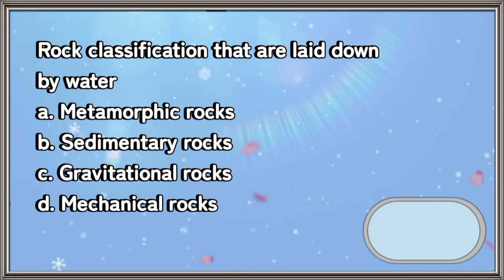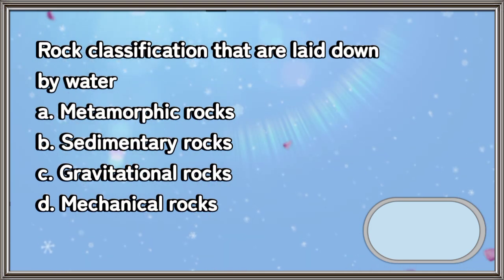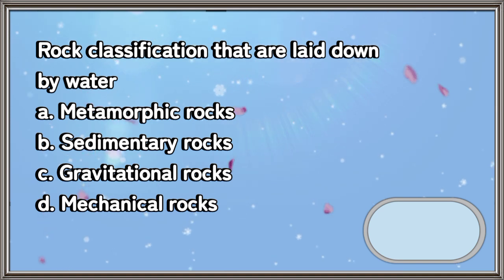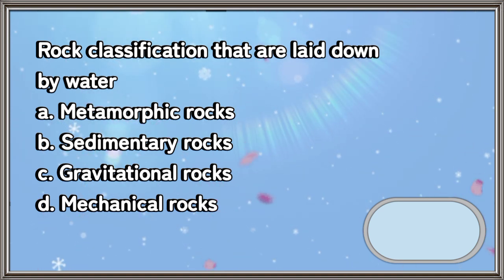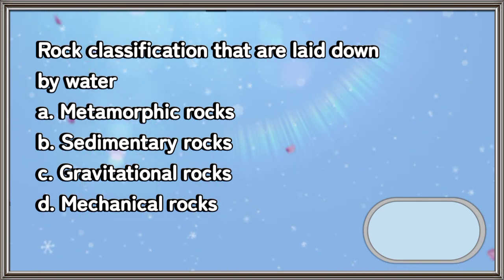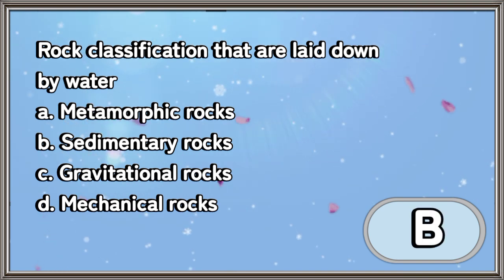Rock classification that are laid down by water: A. Metamorphic rocks, B. Sedimentary rocks, C. Gravitational rocks, D. Mechanical rocks. The answer is letter B.